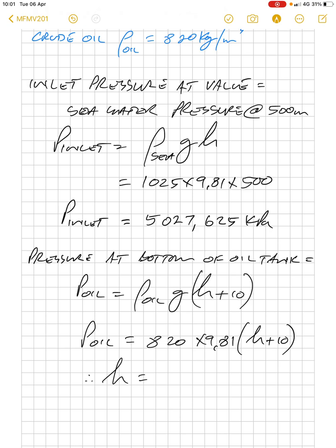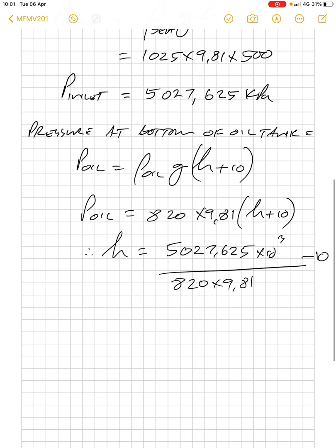We can then calculate our h because we know what the pressure in the oil is. That oil pressure is 5027.625 times 10 to the 3, and we divide that by 820 times 9.81. That gives us a height of 615 meters.